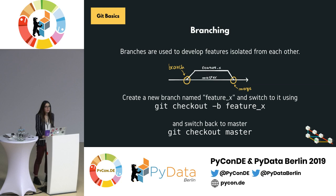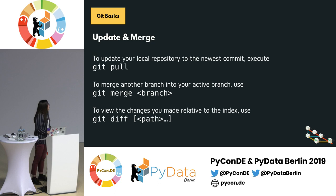To update your local repository, you can run git pull. For merging, you have git merge. And to view the changes you've made relative to the index, you can run git diff.